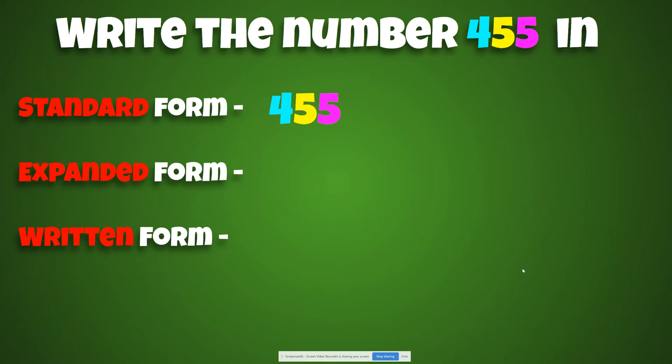Now expanded form explodes to 450 and 5. So they add together to make one number. Good job, guys. Written form is just the words 455. You are doing fantastic. Are you ready for the last one? Go ahead and erase your boards. We are getting ready. Mario believes in you.